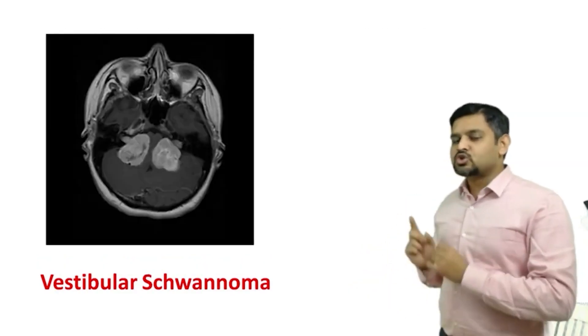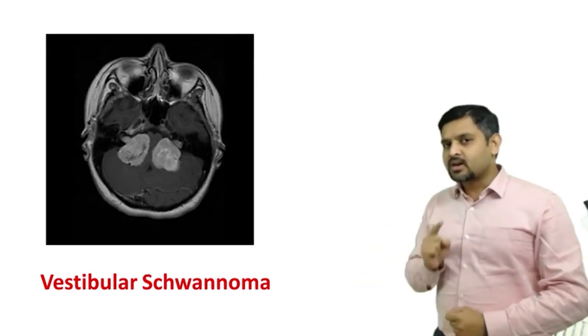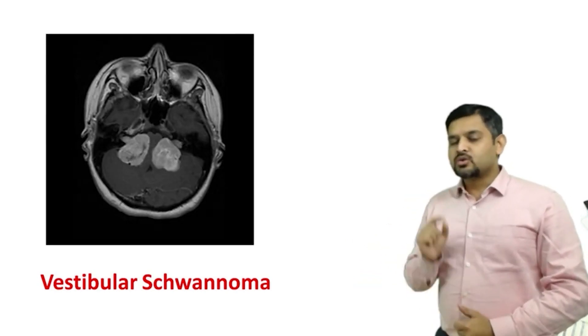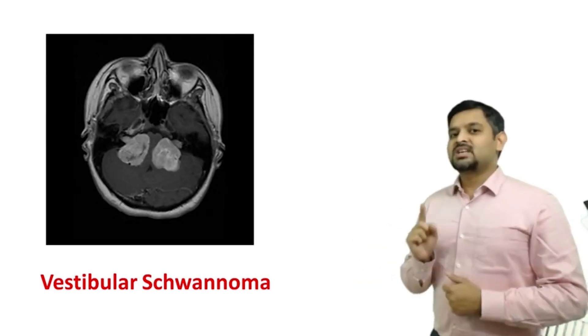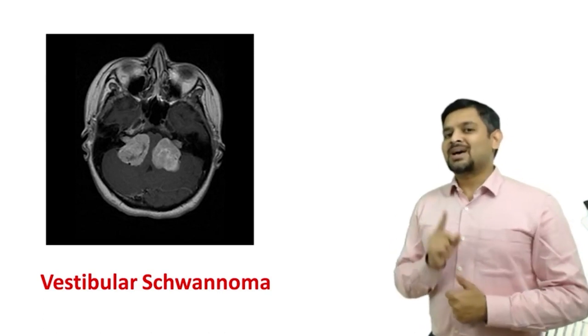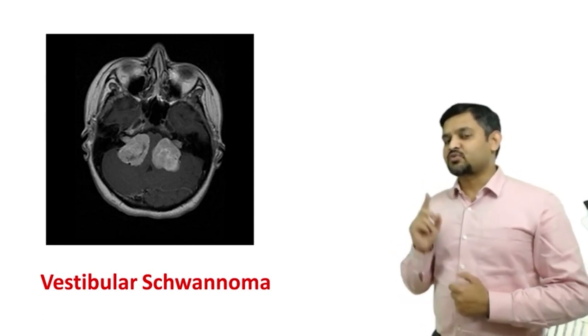Bilateral vestibular schwannoma should make you think about neurofibromatosis type 2. We will see sellar and parasellar masses in the next video.